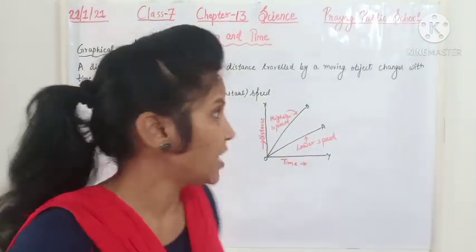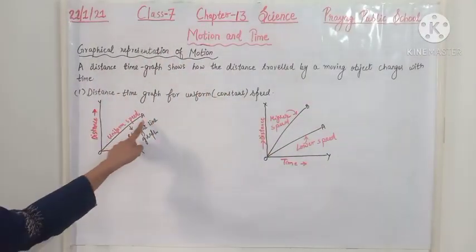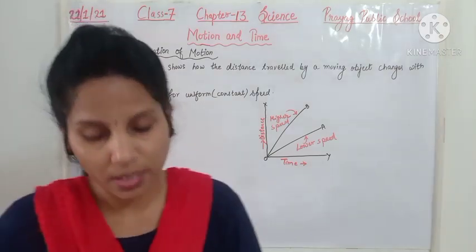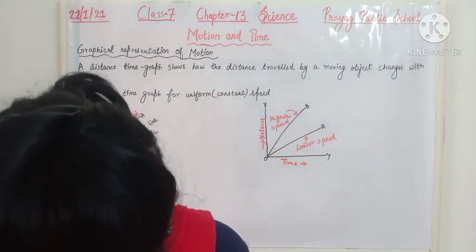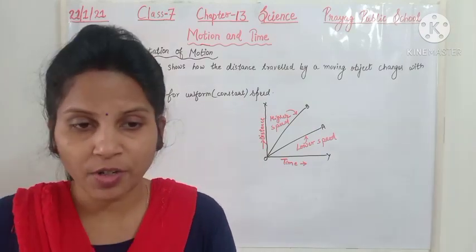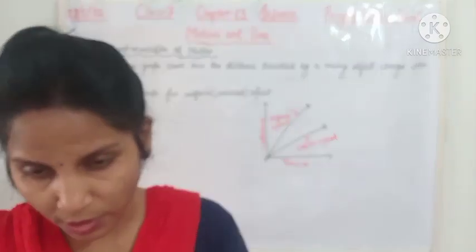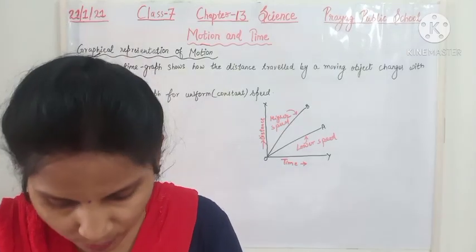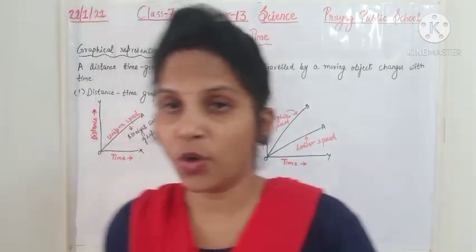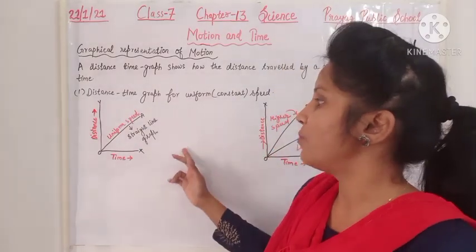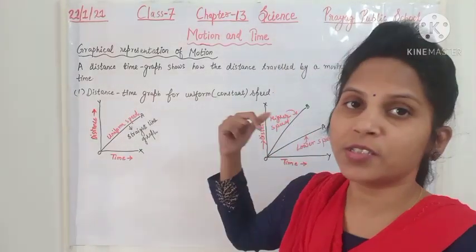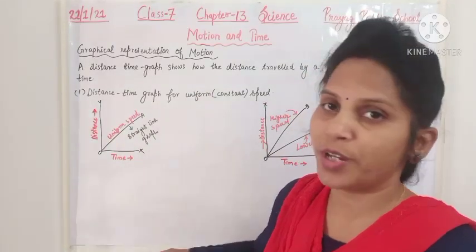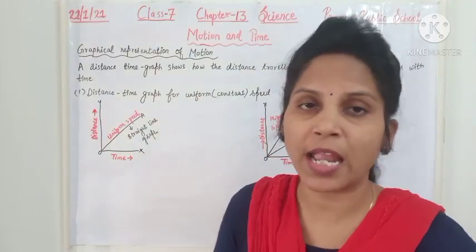As you can see, OA represents uniform speed and it is a straight-line graph. The distance-time graph of an object moving with constant or uniform speed is always a straight line. So always remember: when an object moves with uniform or constant speed, the distance-time graph will always be a straight line.